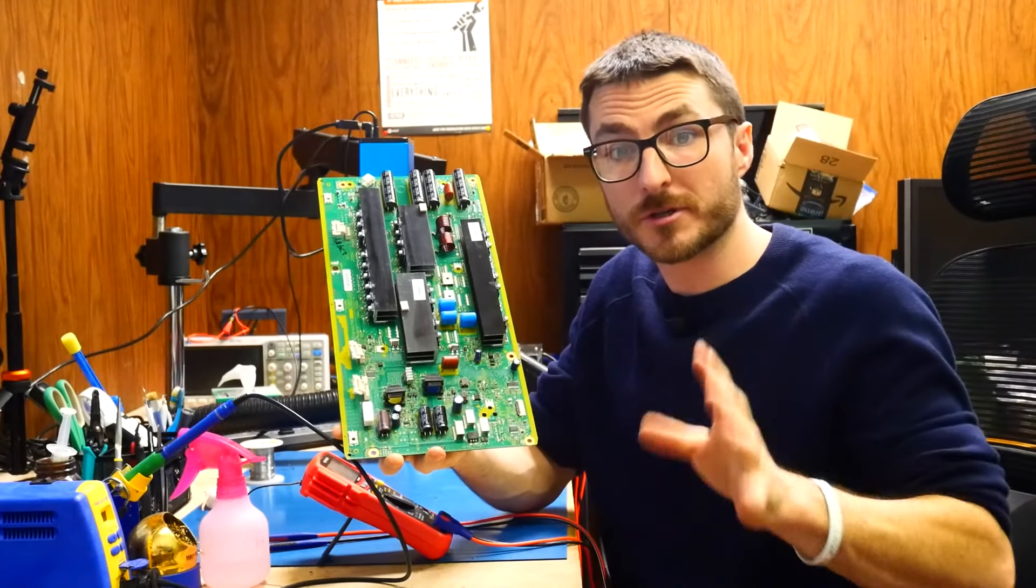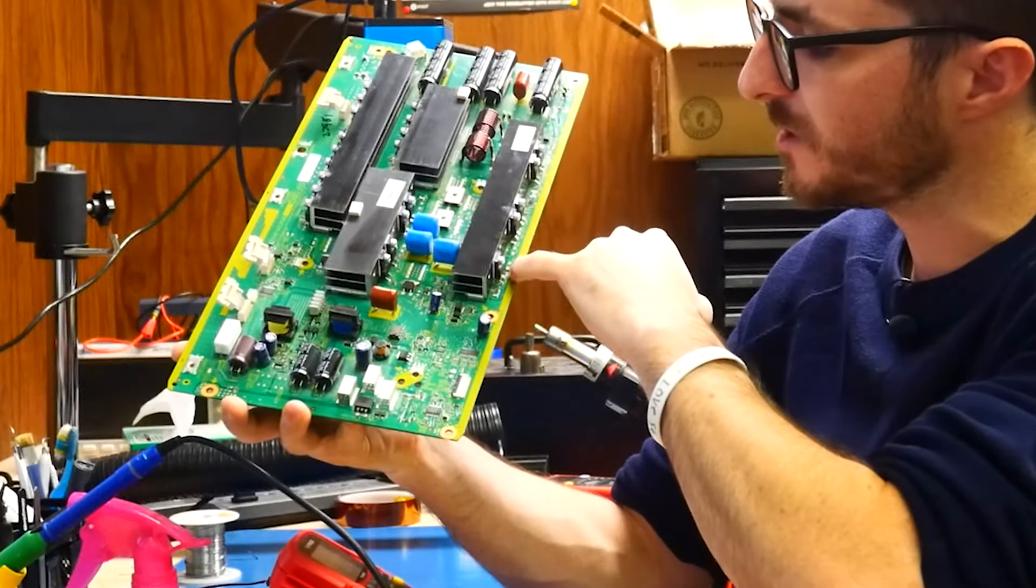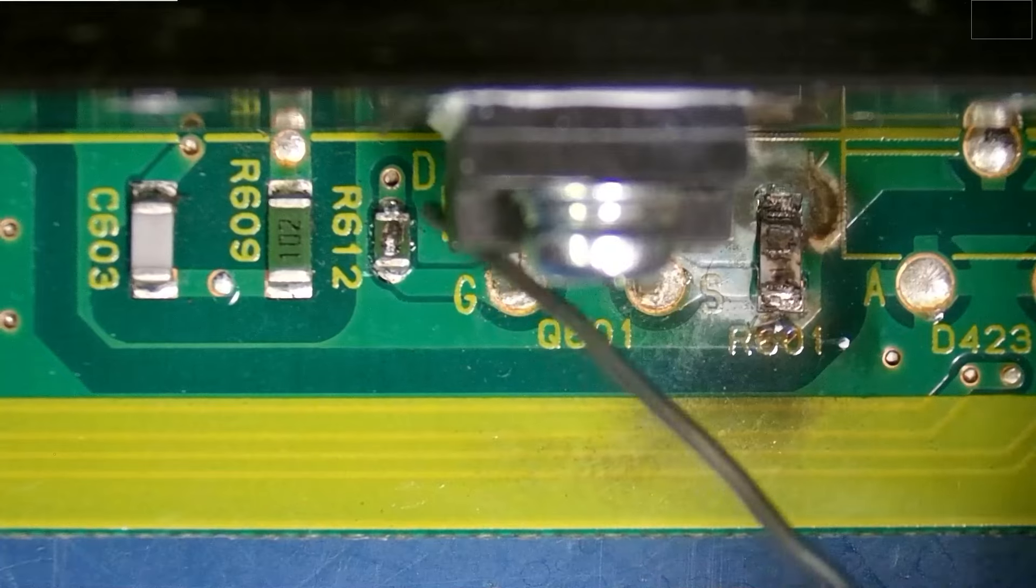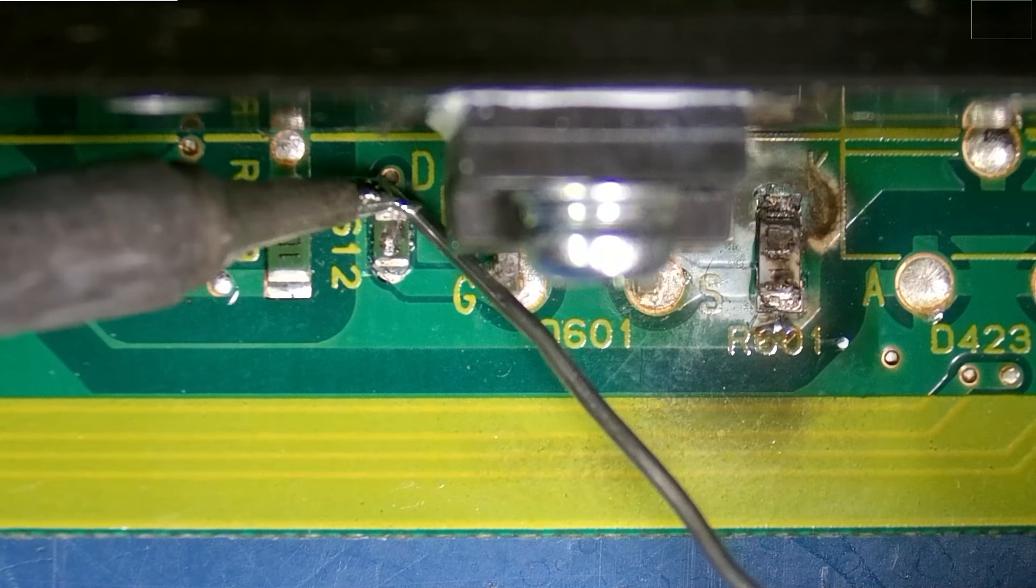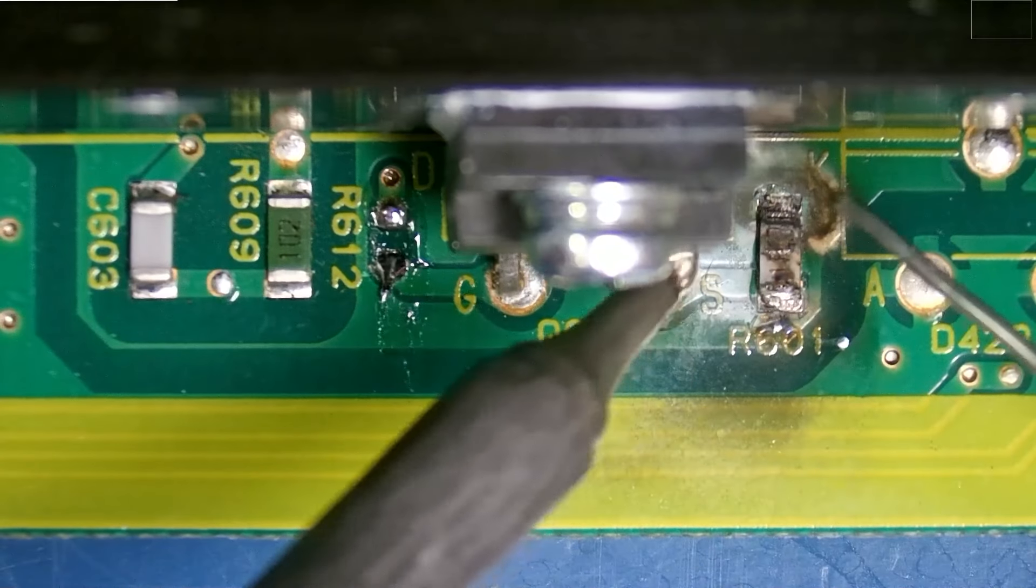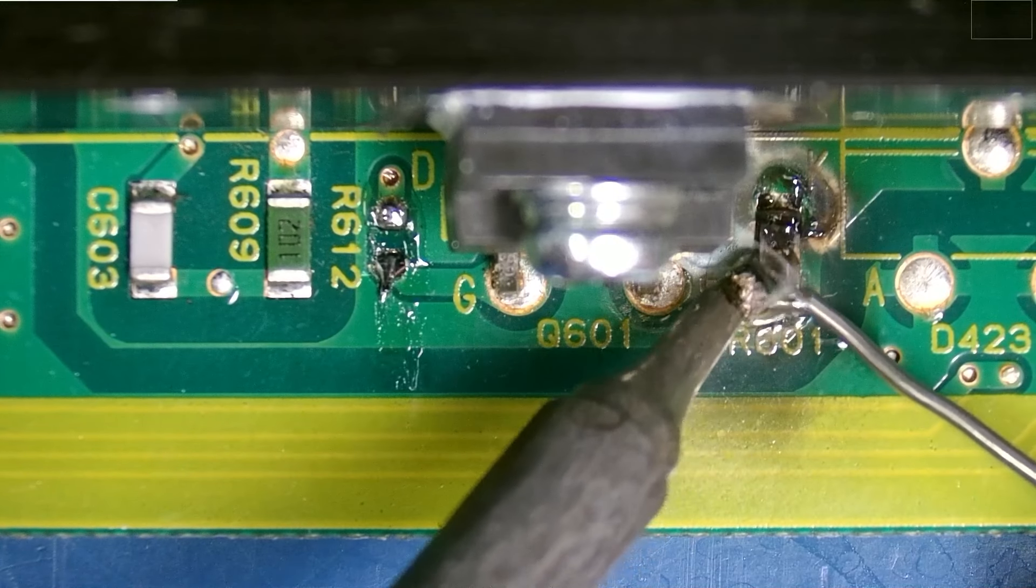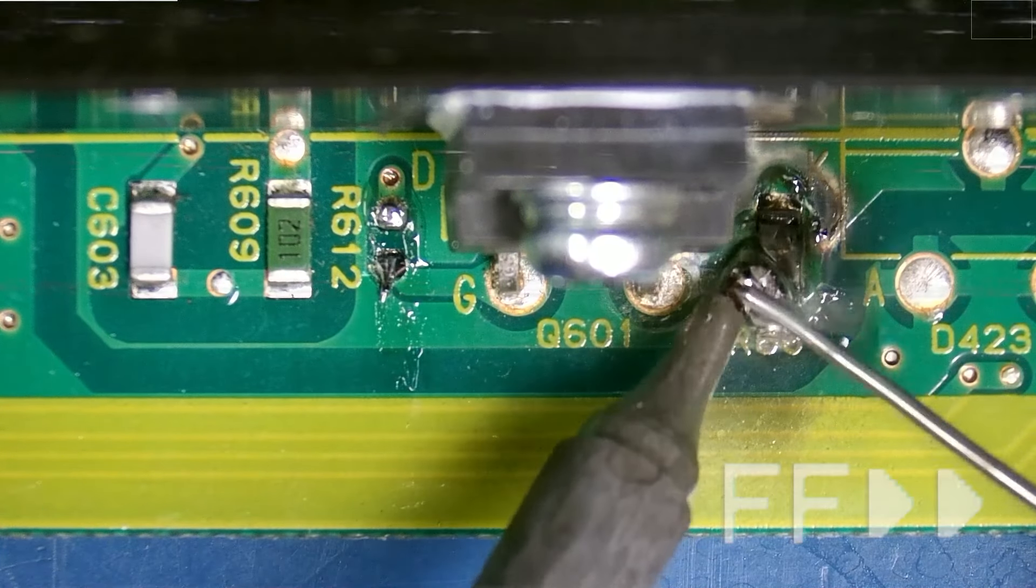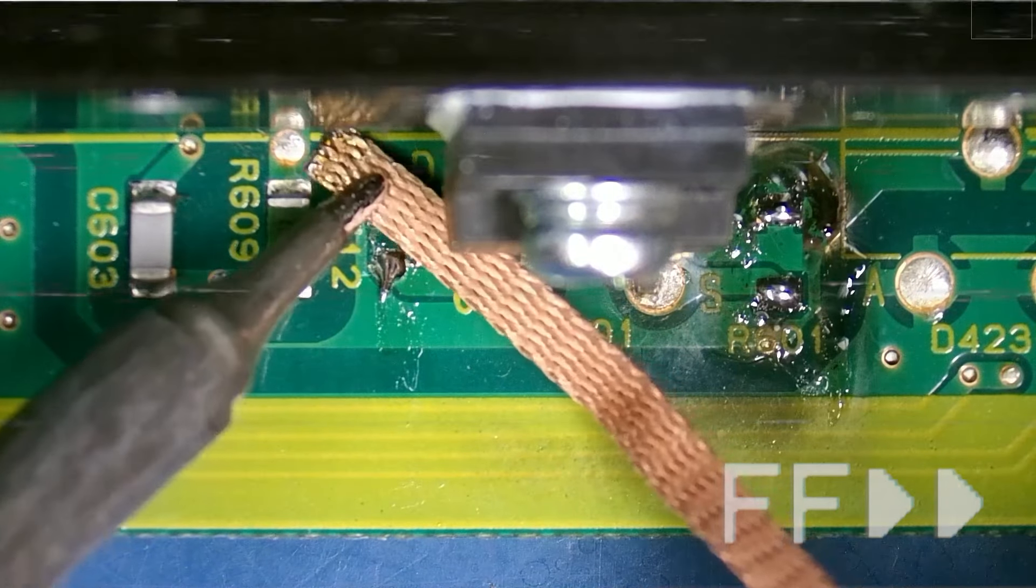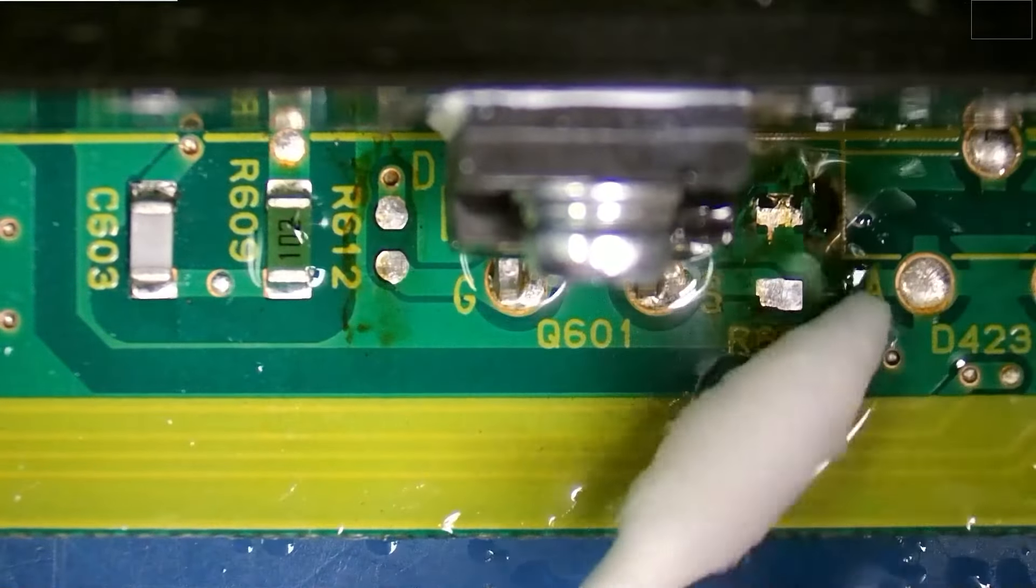To begin the repair, what I'm going to start with is the surface mount components. So we're going to replace the two resistors next to that Q601, as well as the two diodes over here. So this is our 47 ohm resistor. We'll go ahead and desolder that one first. We'll go ahead and desolder this one over here, which I believe is a 1 or 10 ohm resistor.